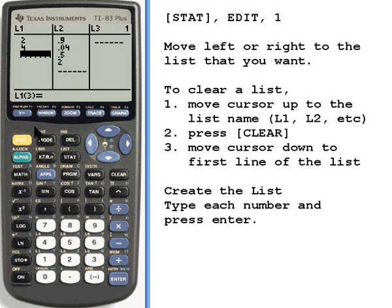Notice each time I press enter, it enters the number in the list, and at the bottom of the screen it's showing me, it's asking me what I want for the next item, list 1, number 3.